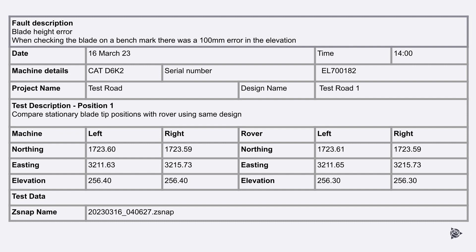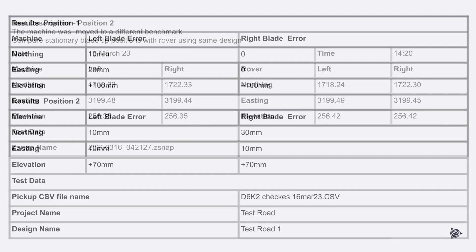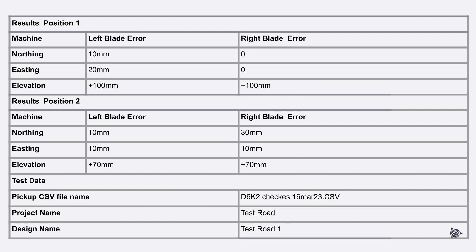Here is an example of a simple test plan, showing the fault description, date and time, machine details, project information, and test description. The machine positions for the left and right blade tips are recorded, including northing, easting, and elevation. The survey positions of the left and right blade tips are also recorded, along with the Z-SNAP name taken with the machine in the test position. A second machine position was checked and added to the test plan, with left and right blade tip positions recorded, survey positions of the blade tips recorded, and the Z-SNAP name for the second position also added. The differences between the machine positions and the survey positions from each test have been compared and results added to the test plan.